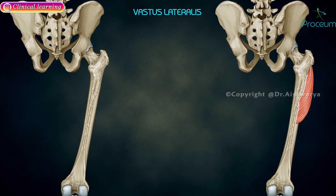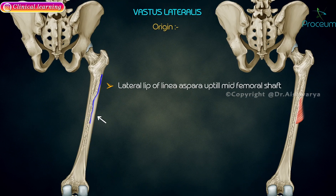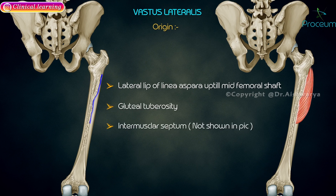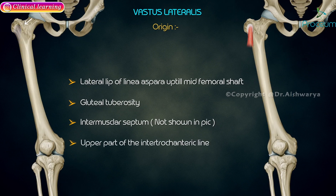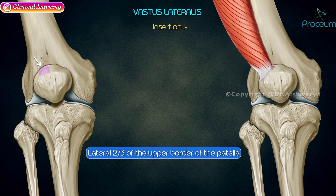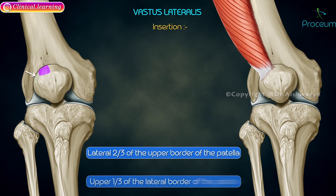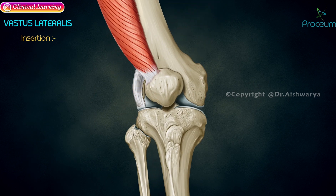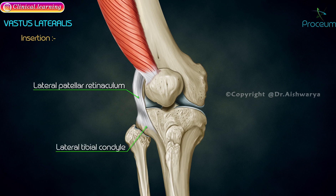Vastus lateralis. It originates from the lateral lip of the linea aspera up to the mid femoral shaft, gluteal tuberosity, intermuscular septum, the upper part of the intertrochanteric line, and greater trochanter. It ends in an aponeurosis which joins the quadriceps tendon to be inserted onto the lateral two-thirds of the upper border of the patella and upper one-third of the lateral border of the patella. It also gives off a fibrous expansion known as the lateral patellar retinaculum, which is attached to the lateral tibial condyle.